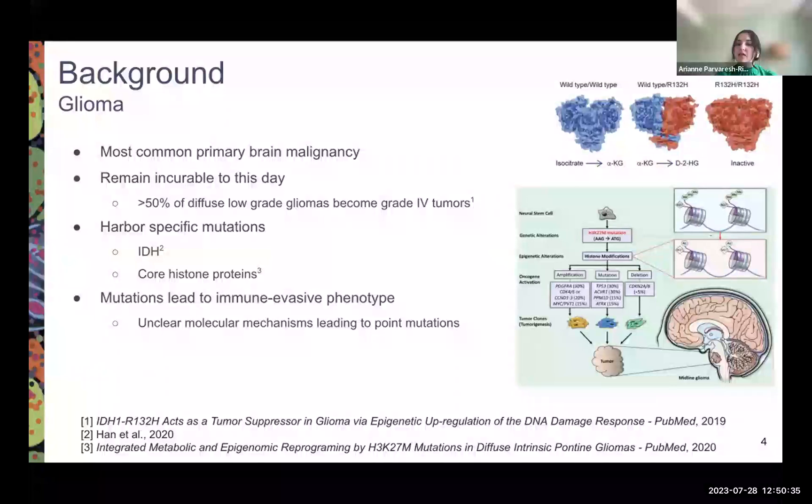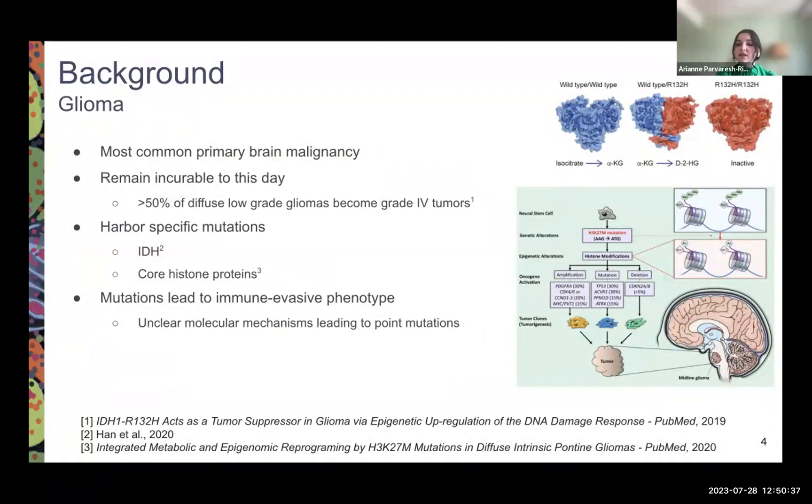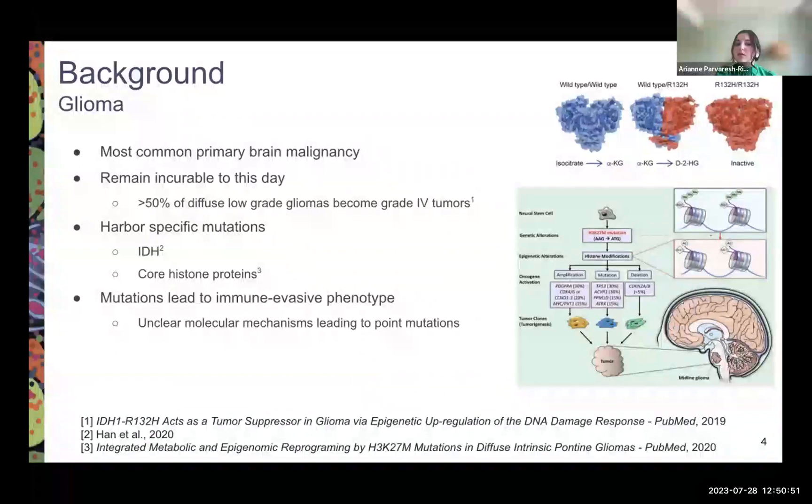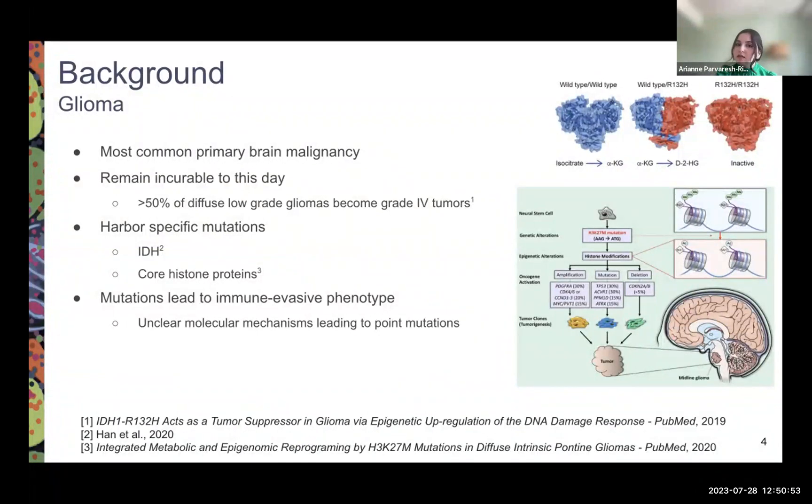The mutations in gliomas often lead to immune-evasive phenotypes, which is when cancer cells can develop mechanisms to evade the immune system surveillance and continue growing, proliferating, and spreading throughout the body. The exact molecular mechanism that leads to these point mutations remains unclear, and that's what we tried to study at the TAN Lab.